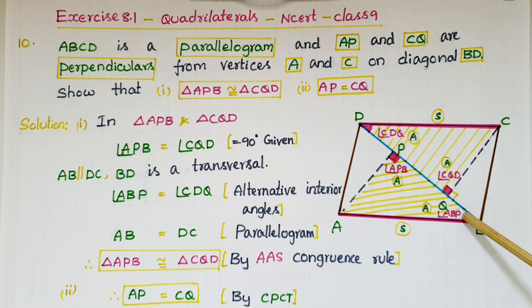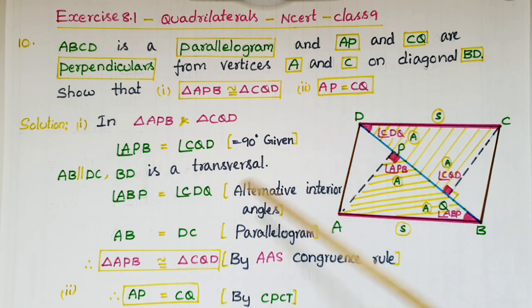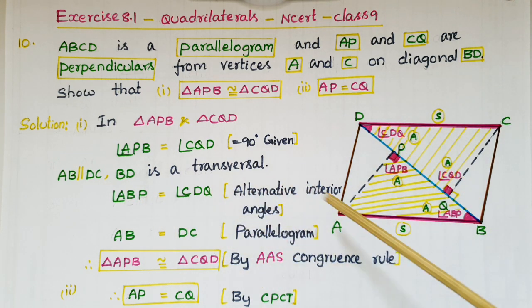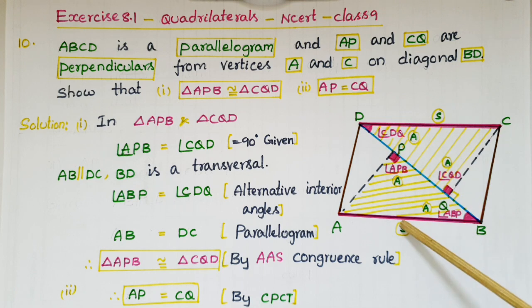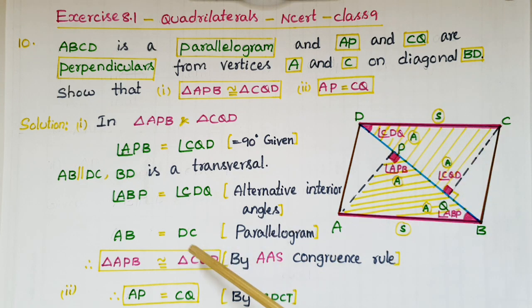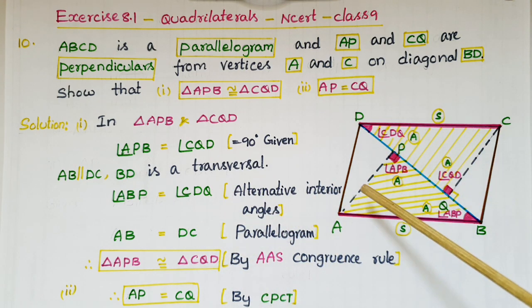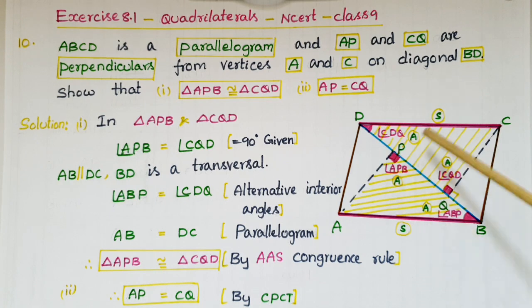We know that if a transversal line intersects two parallel lines, then alternate interior angles are equal. So angle ABP is equal to angle CDQ. And AB is equal to DC because in a parallelogram opposite sides are equal. So we can congruent these two triangles.